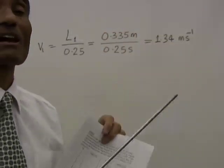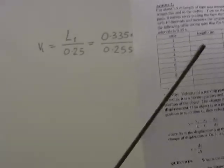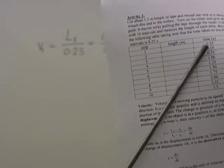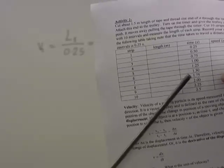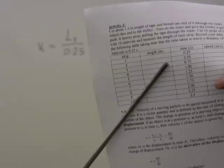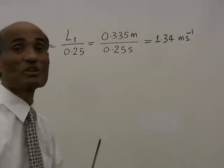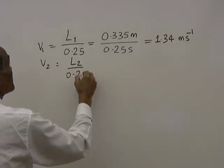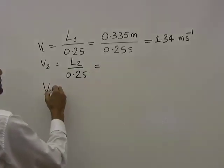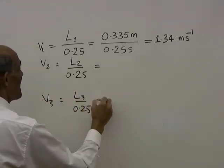Let me work out the first strip for you. The speed of the first strip is V1 equals L1 divided by 0.25, and L1 is 0.335 meter, so V1 equals 0.335 divided by 0.25, which is 1.34 meters per second. Now you need to calculate the speed of each strip. Don't be confused by the time column showing 0.25, 0.5, 0.75 — those are cumulative times. The time interval for each individual strip is always 0.25 seconds. So V2 equals L2 divided by 0.25, V3 equals L3 divided by 0.25, and so on.